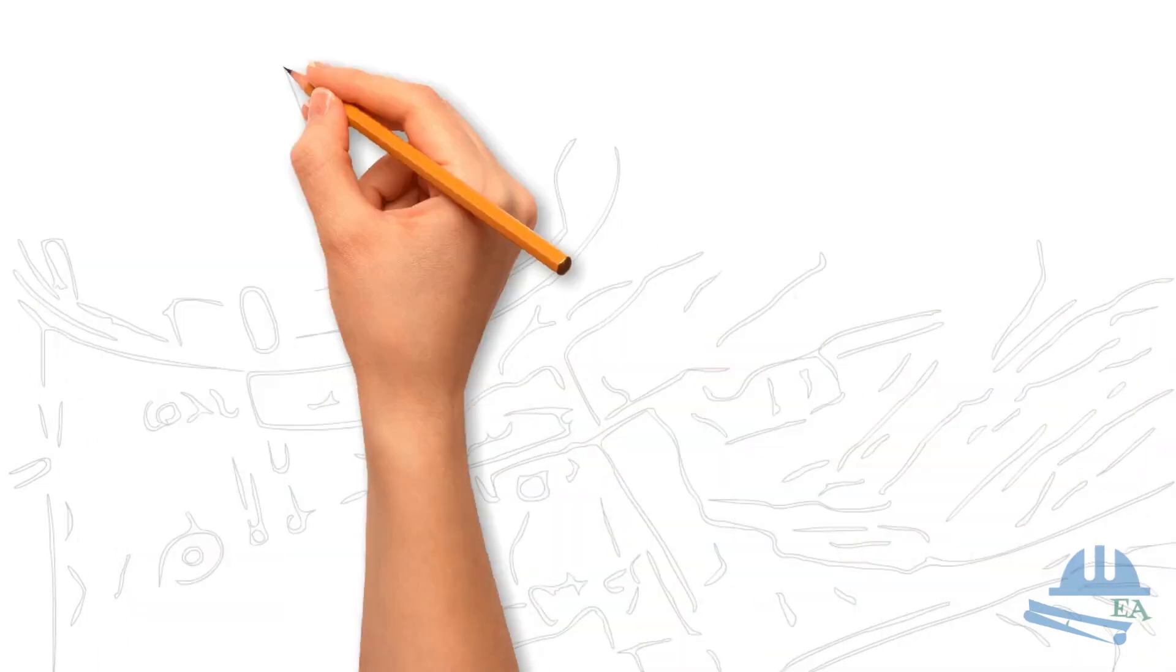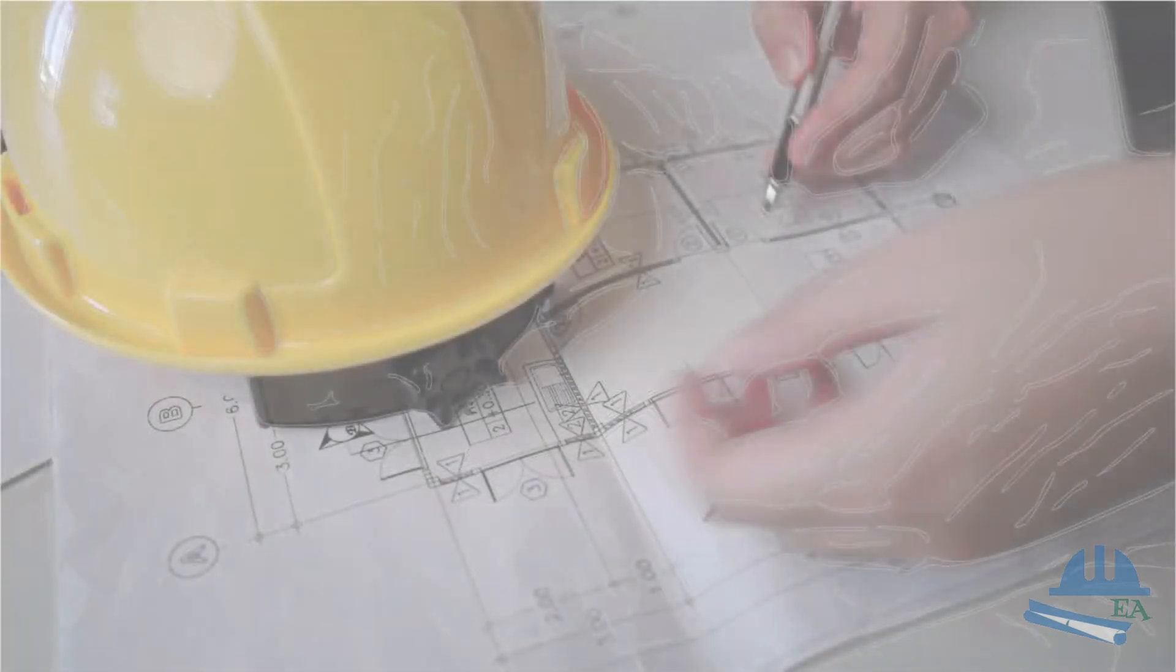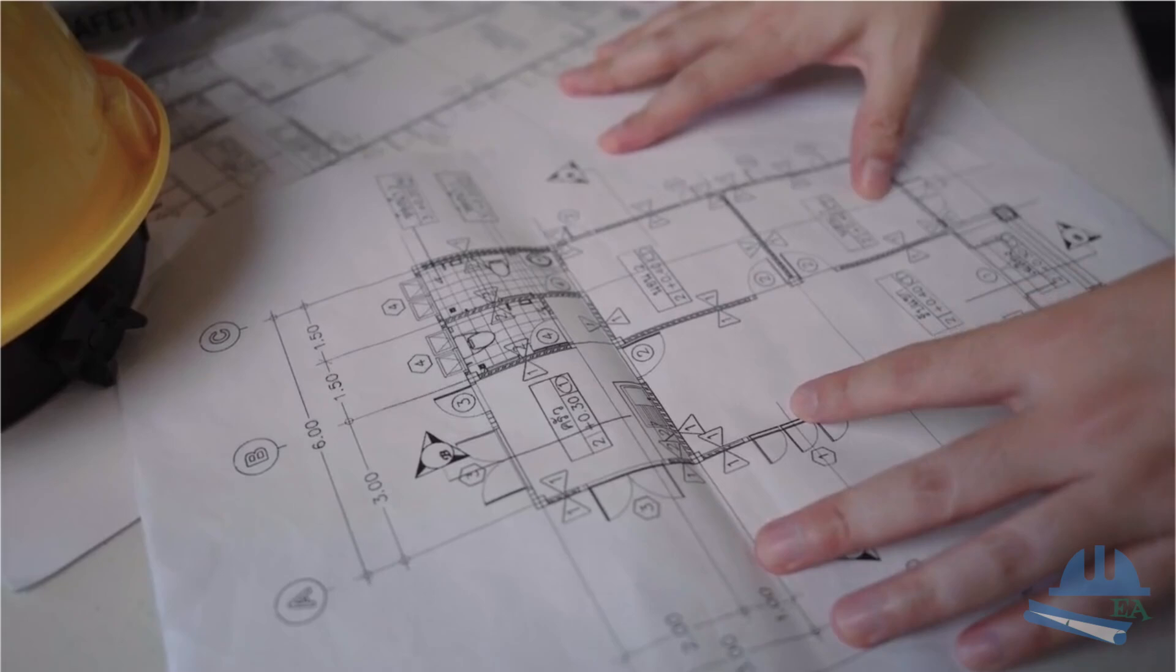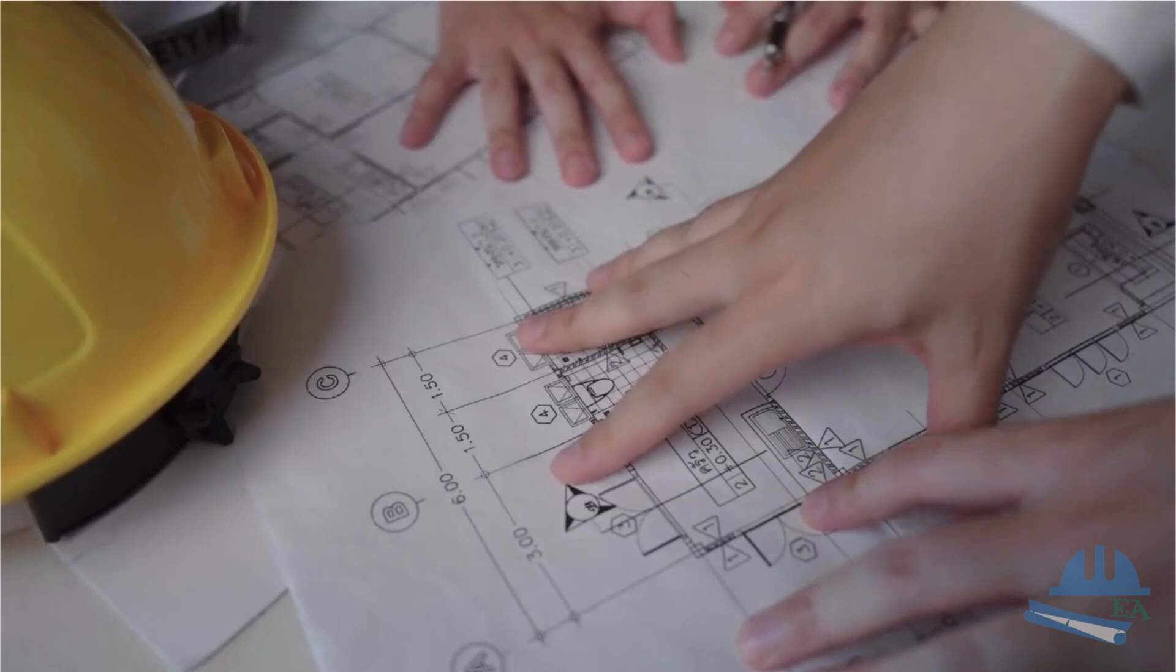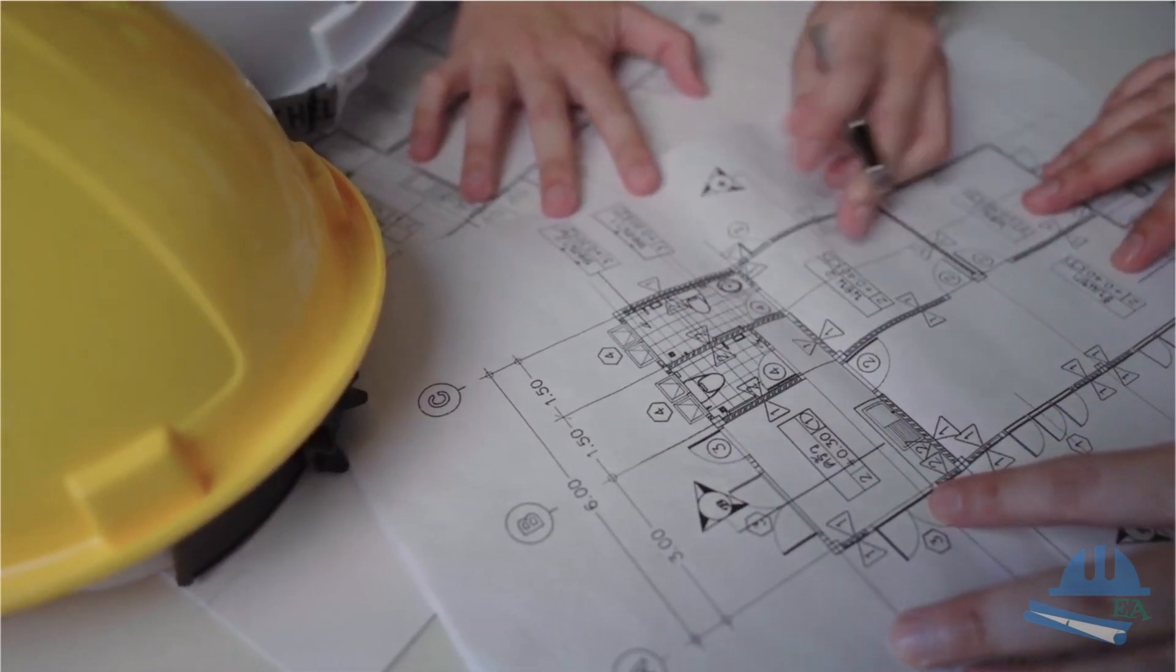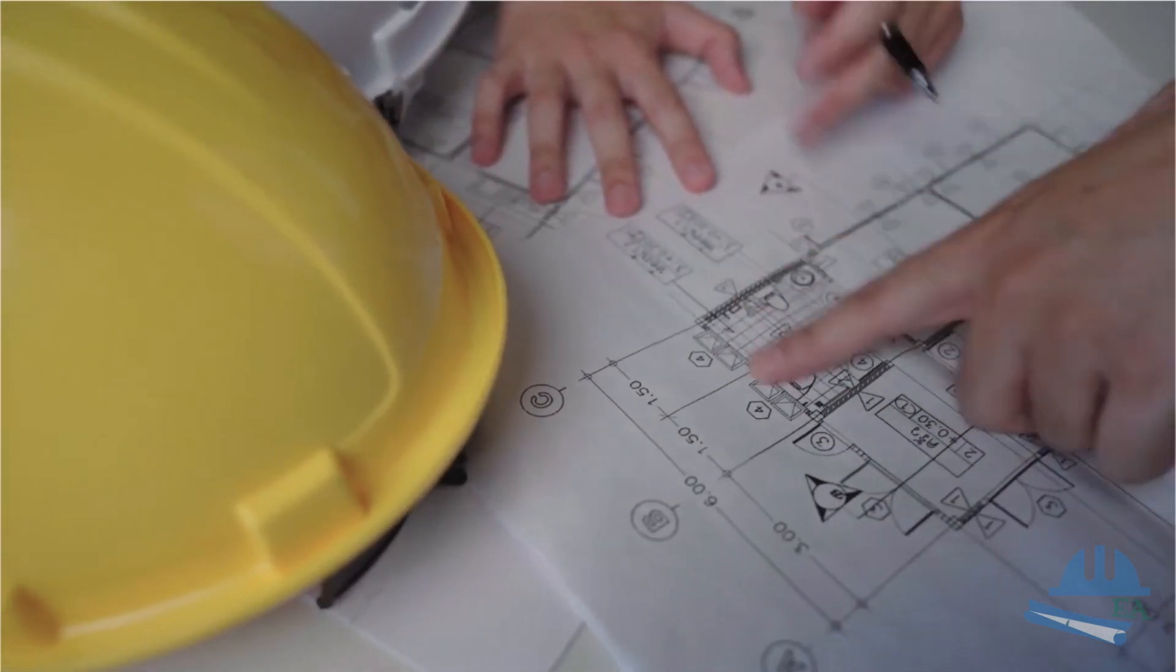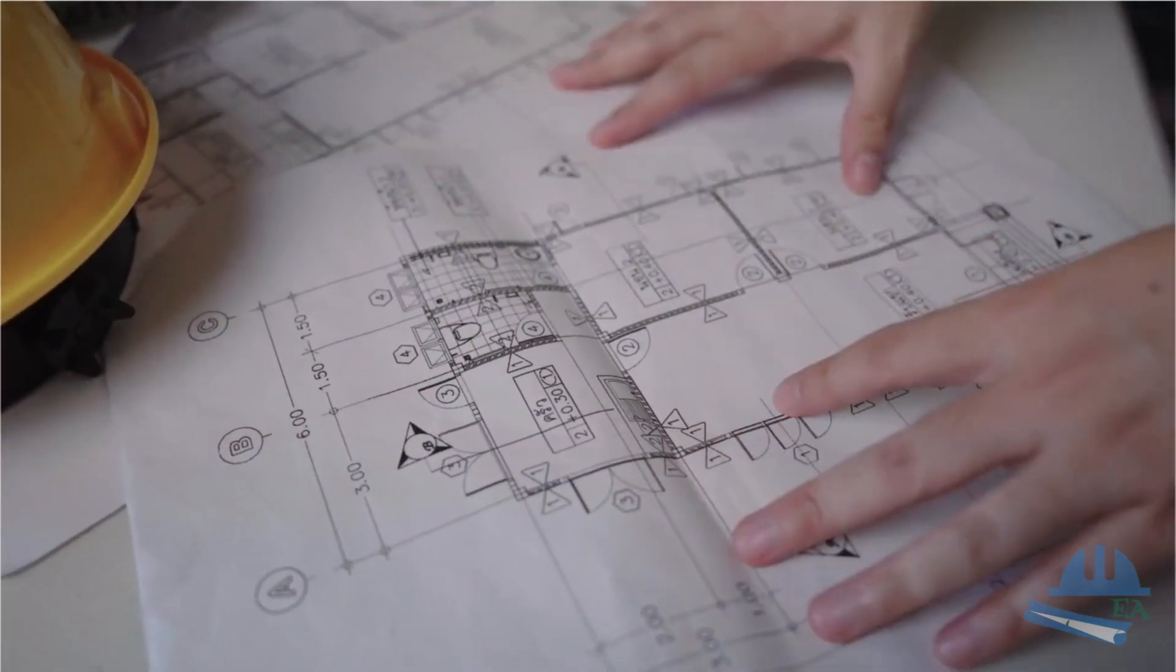Alright guys, we have covered a lot of things today, discussing some of the common mistakes in structural design. Remember, as civil engineers, we have a huge responsibility to ensure our designs are safe, functional and reliable. It's essential to double check our work, seek peer reviews and always stay updated with the latest codes and standards. Continuous learning is the key to maintaining the integrity of our designs. Thank you for watching and take care.